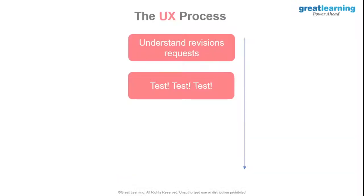You have to test multiple times with one specific group and have different designs. You always create more than one prototype — you have multiple prototypes and test all of them. The person will check the first, second, and third prototypes of my IPL website or Amazon food delivery app. You'll be testing users with all of those. The one they choose and tell you they like, you'll be inclined toward that particular website.